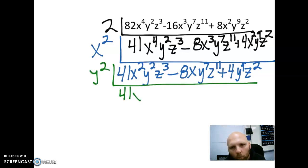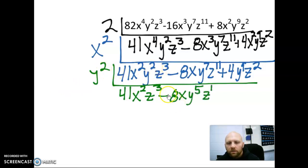So now we're going to look at y. We're going to divide by y², because the biggest number of y's that each term has is y². So y² divided by y², the y goes away. y to the seventh divided by y² is y to the fifth. And y to the ninth divided by y² is y to the seventh.